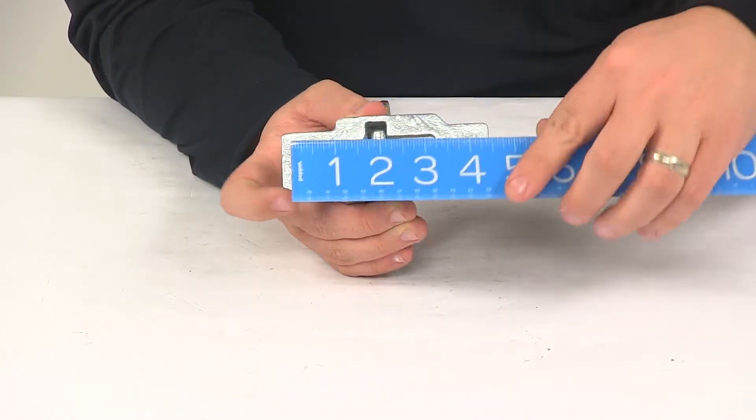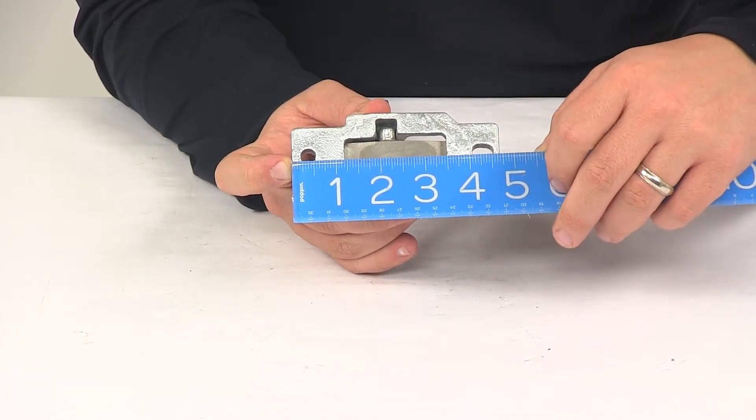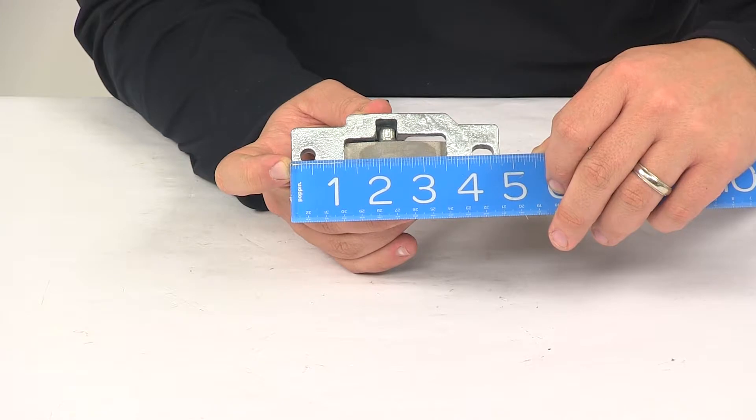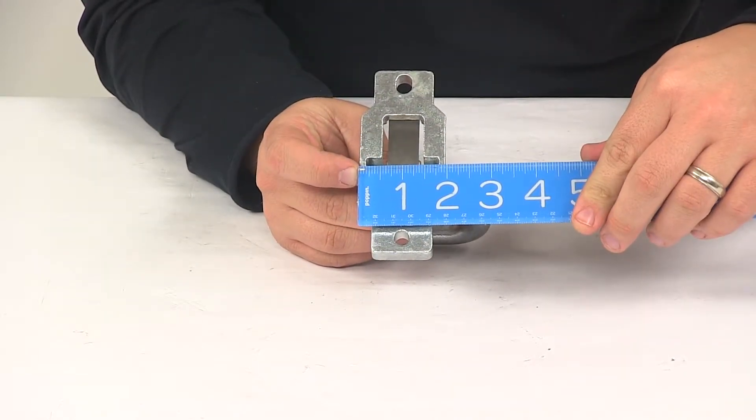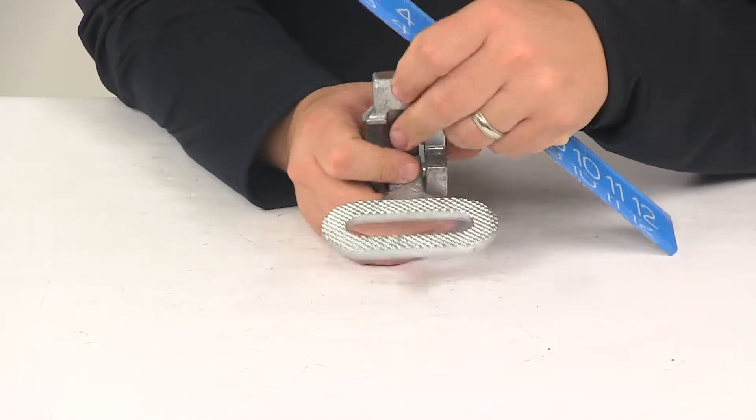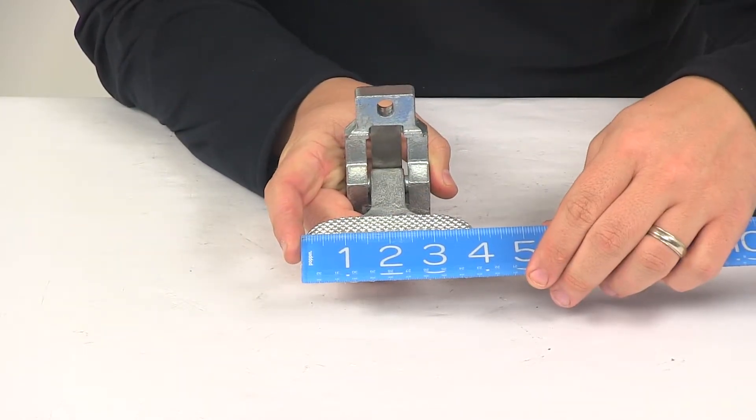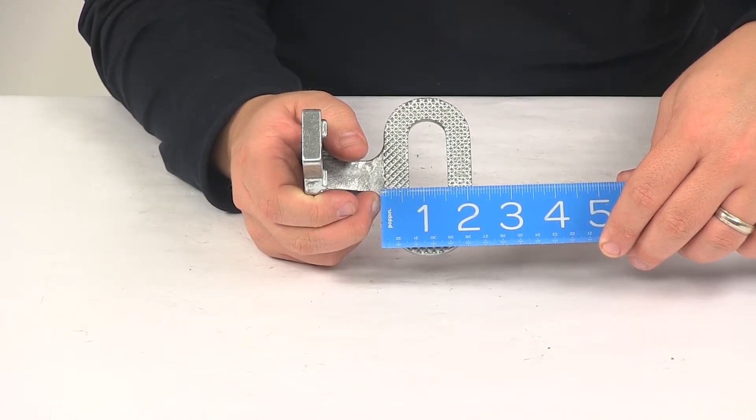The back plate has an overall measurement going this direction of pretty close to four and three quarters of an inch. Going this direction, it's going to measure pretty close to two inches wide. Now we have the footing area or the pad itself. That measures four inches by about two and one eighth.